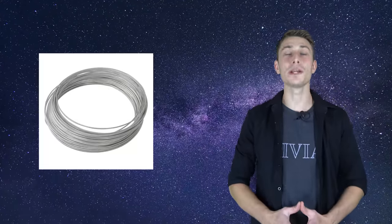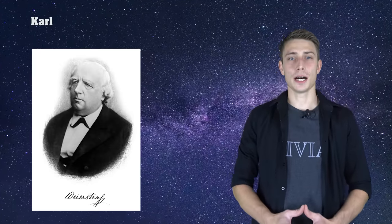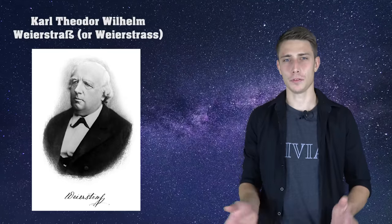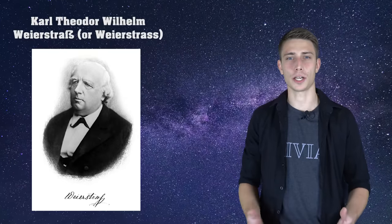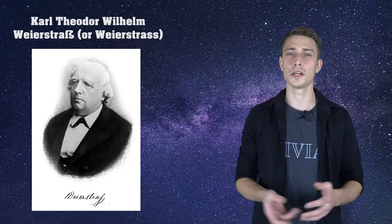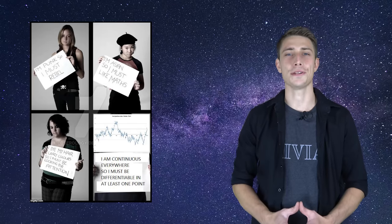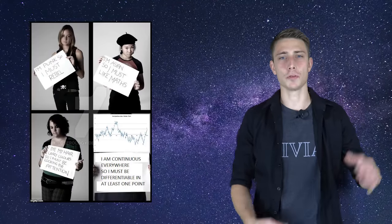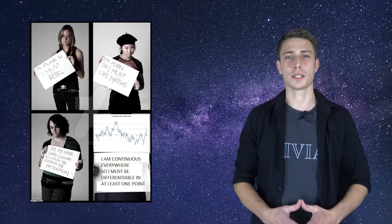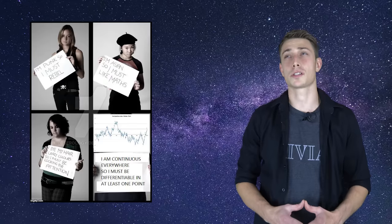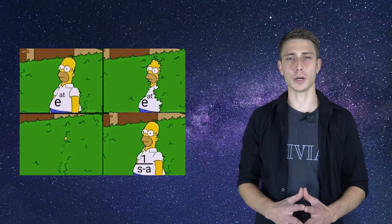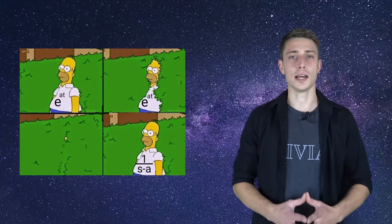Next up is your boy Weierstrass — Karl Theodor Wilhelm Weierstrass. If you did analysis or calculus before, you might have heard of his name. He did some stuff together with Bolzano. Bolzano was Czech or similar if I remember correctly — you can correct me if I'm wrong. But that's his name: Weierstrass.